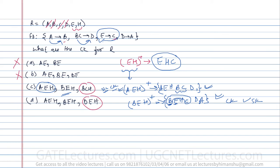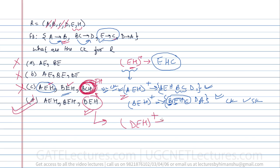Option C contains BCH, which does not contain E. Since E must be in every candidate key, option C is directly eliminated and option D is correct. Verifying DEH closure: with E we determine C; with D we determine A; with A we determine B — all attributes are determined. So DEH is also a candidate key, confirming option D is the answer.